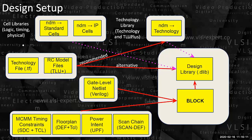When I say design setup, I want inputs from you — what files would you need? Constraints, DEF, floor planning — because you could have done a two-pass flow of synthesis. You remember two-pass synthesis flow? You take certain information from the place and route tool, you pass it back to your synthesis tool to do a better synthesis. So you can potentially already have floor planning information coming from the synthesis tool which it already used.